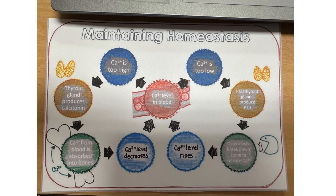That's the whole idea with maintaining homeostasis. Remember, this is a negative feedback system. I know it's negative feedback because we're shooting for the opposite: if the calcium is too high, we want to decrease it — make it go to the opposite. If the calcium is too low, we want to increase it — make it go to the opposite.